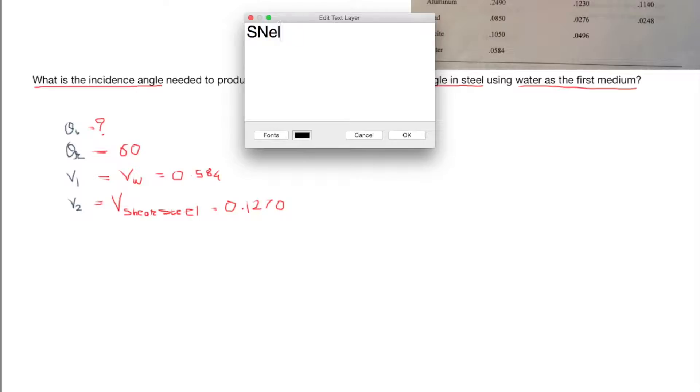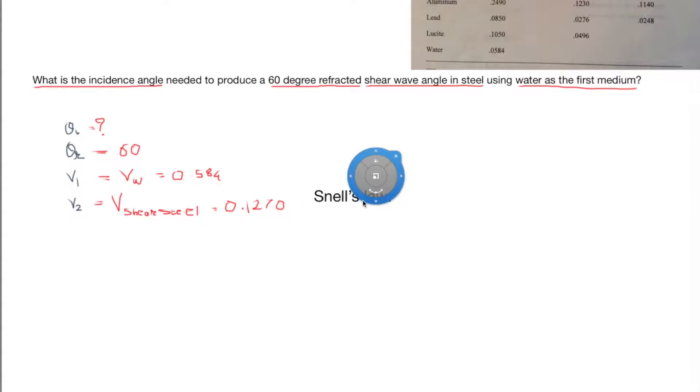So what does my Snell's law tell me? Snell's law states sine of incident angle divided by sine of refracting angle is velocity in medium 1 over velocity in medium 2.